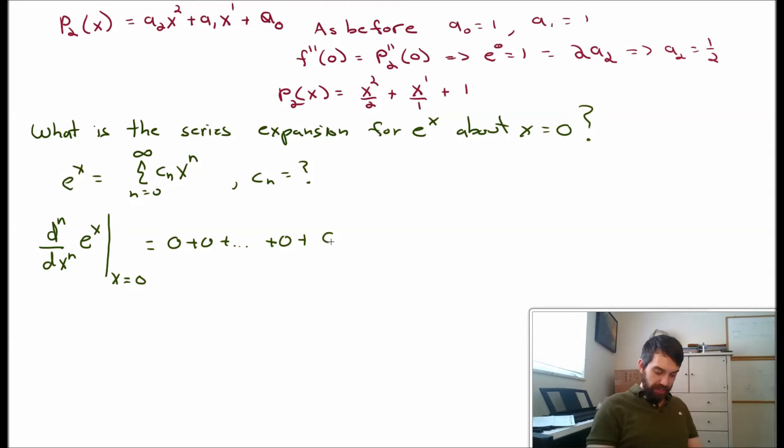So I'm left with the constant cn, that's just a constant, it comes along for the ride. And then I have n factorial, that is the constant in front of x^n if I take the derivative n times. And finally I'm left with x^0, which is 1. So this represents my nth term.